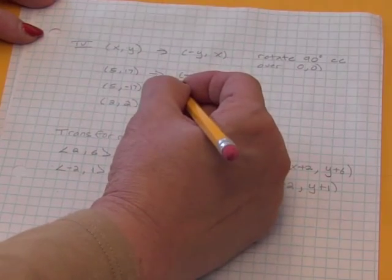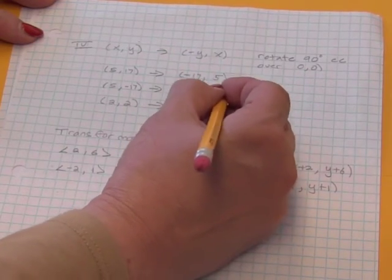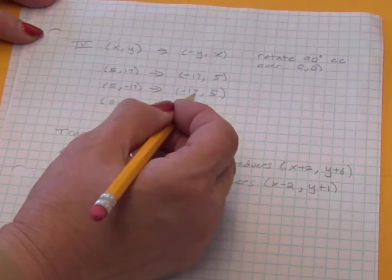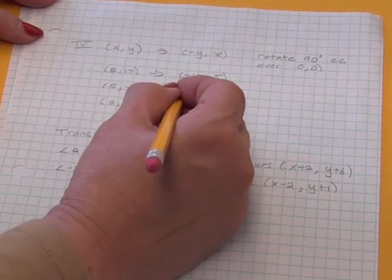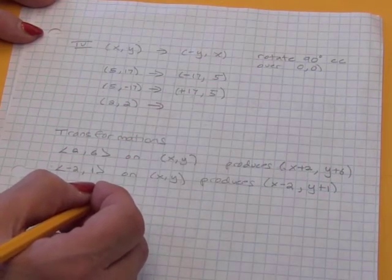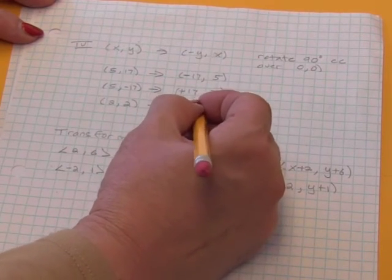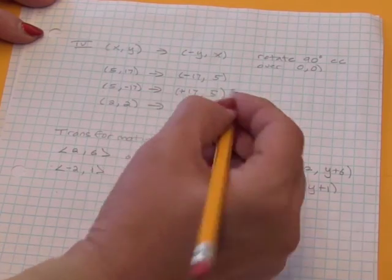Again, now, I'm switching the x and y values, but this number is already negative. Does that mean I don't multiply by negative 1? Of course not. I still multiply by negative 1. Negative 1 times negative 17 is positive 17. Now, 2, 2, when I switch them, I still get 2, 2, but I multiply this new x value by negative 1.